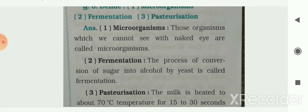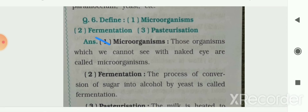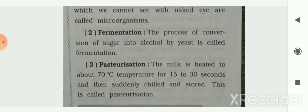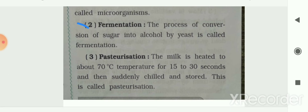Next section: define the following. Microorganisms: those organisms which we cannot see with the naked eye are called microorganisms. Fermentation: the process of conversion of sugar into alcohol by yeast is called fermentation. Pasteurization: milk is heated to about 70 degrees centigrade for 15 to 30 seconds and then suddenly chilled and stored — this process is known as pasteurization.